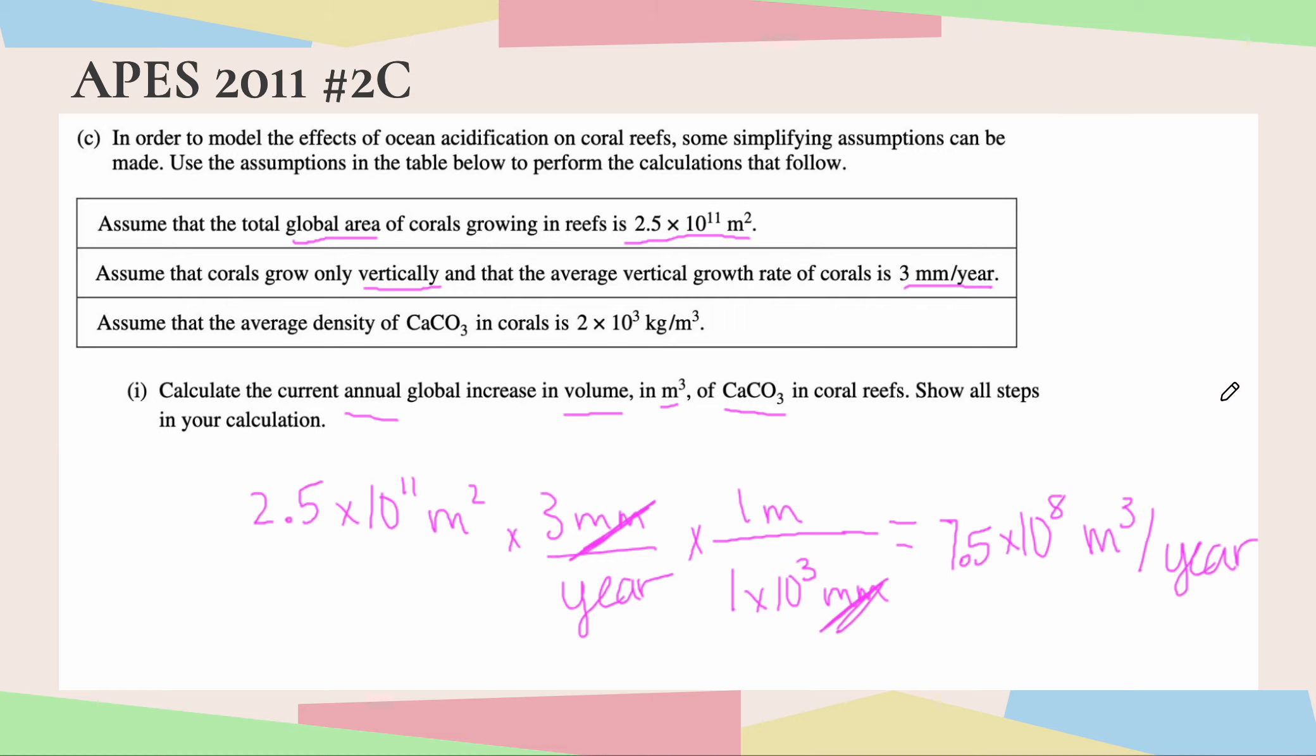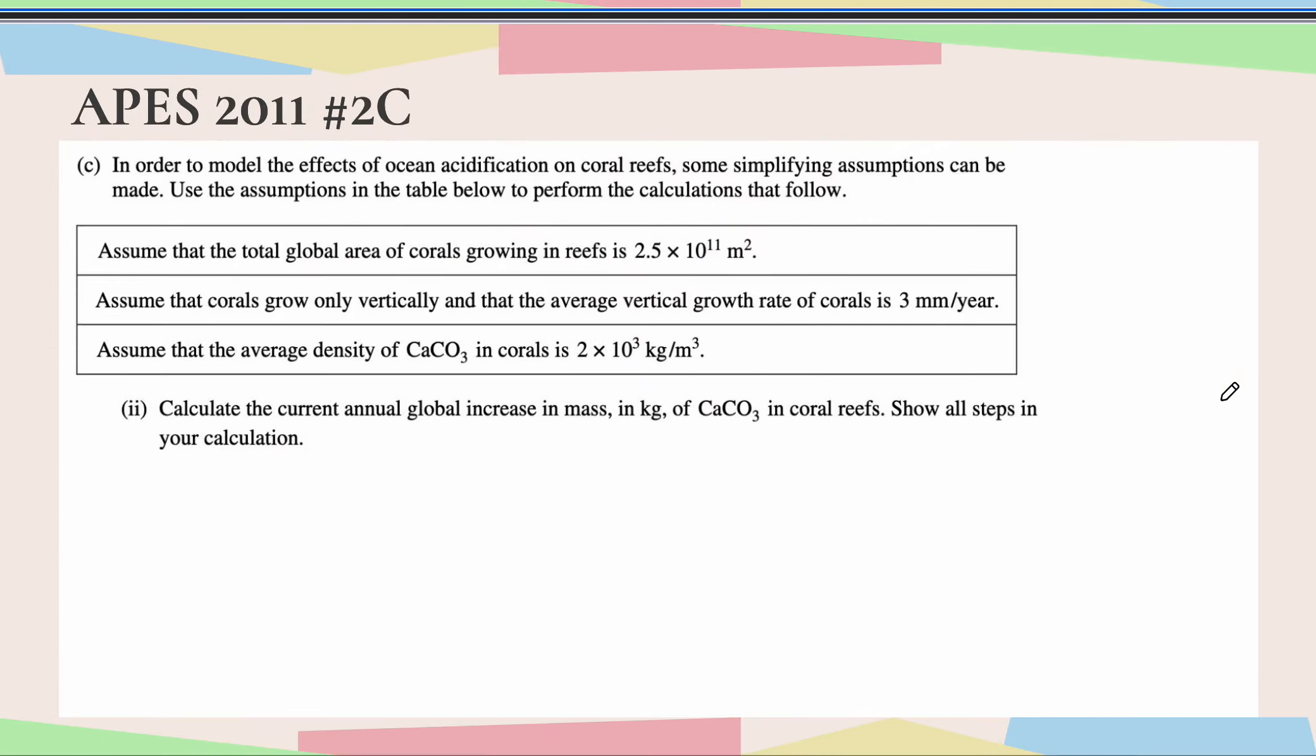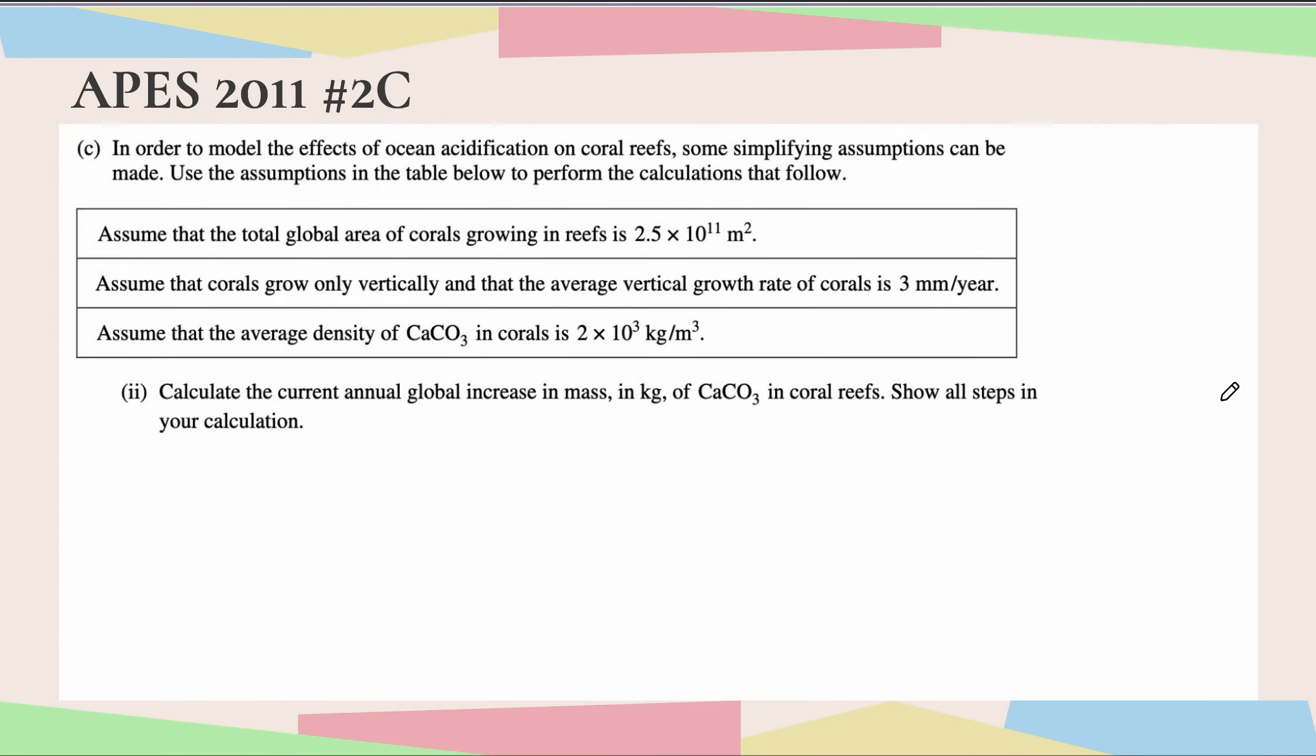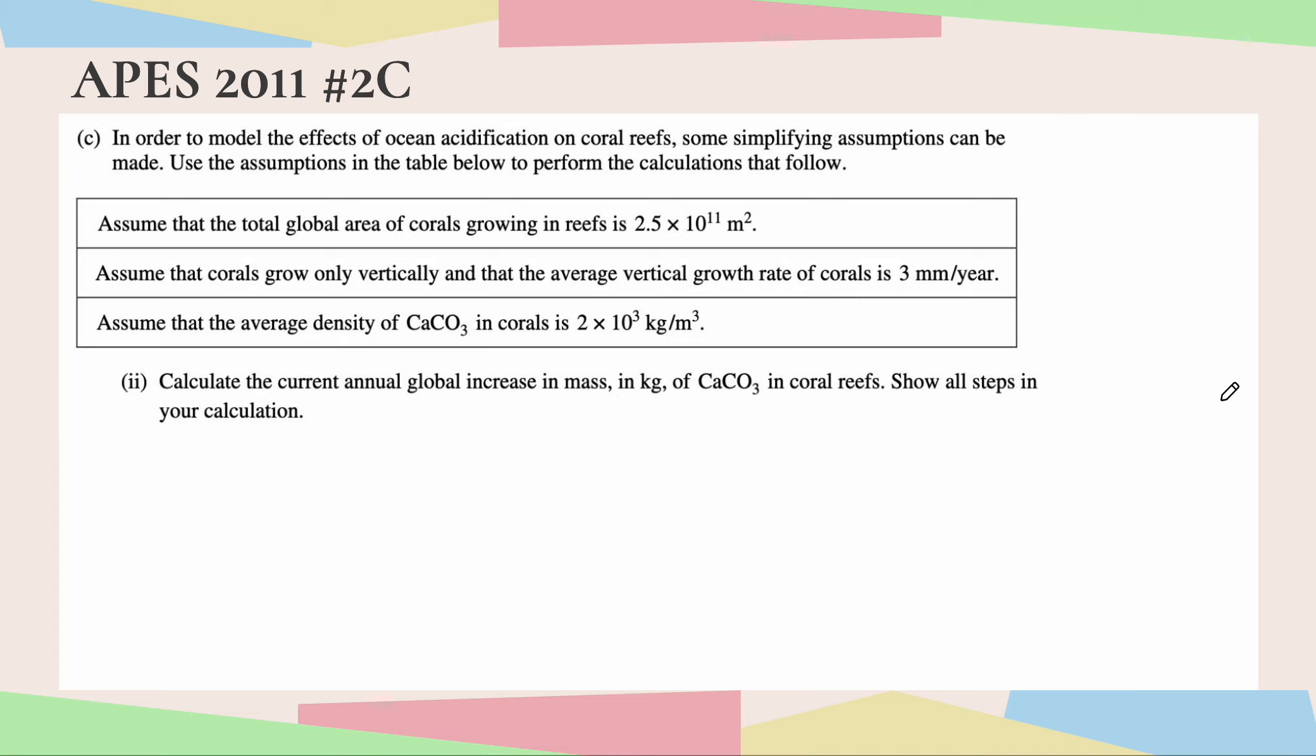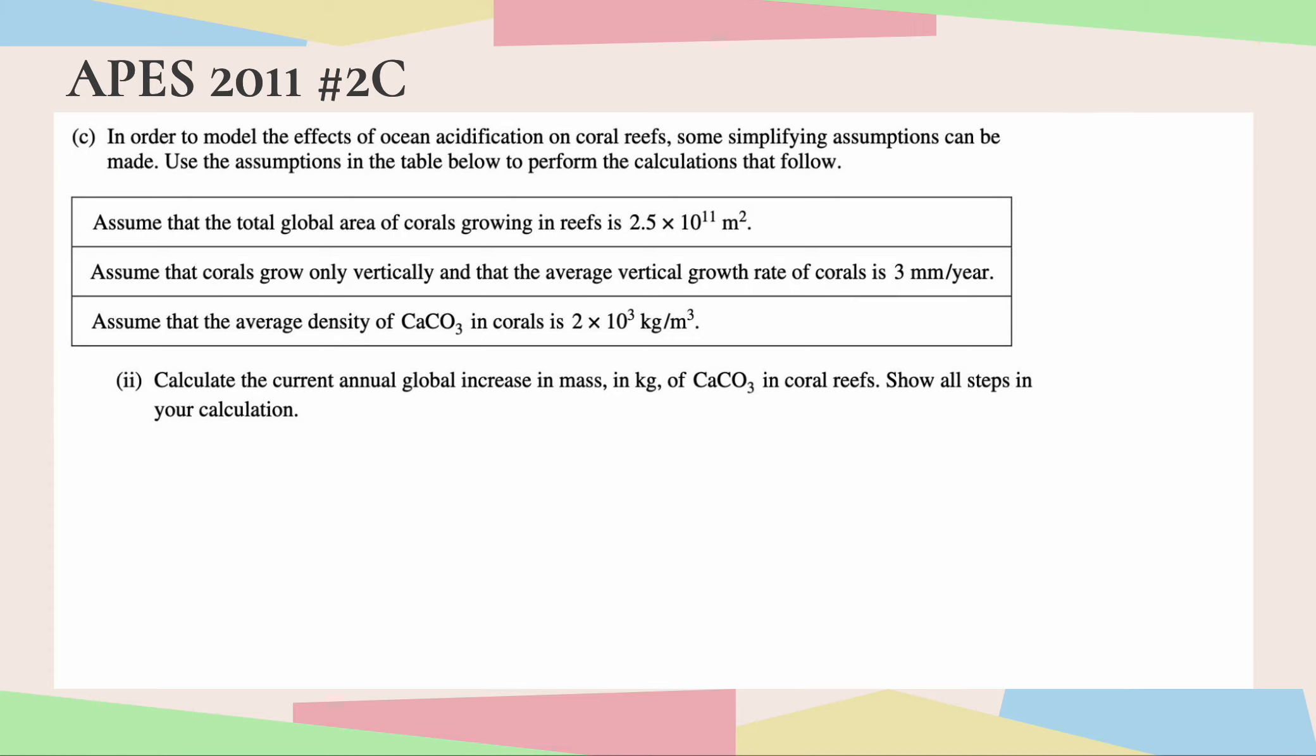Okay, great. Now let's move on to part two and keep that number in mind or keep it written down because we are going to need it for the following questions. This part asks us to calculate the annual global increase in mass in kilograms of CaCO3 in coral reefs. So let's take a look at our third given now. Now we are given the average density.